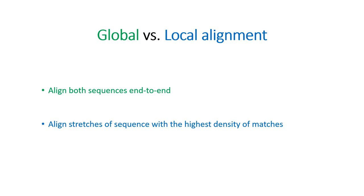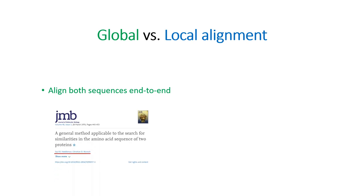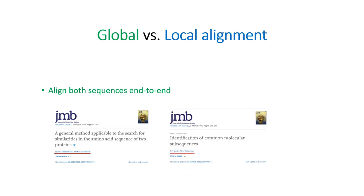Today we will discuss Needleman and Wunsch algorithm, which generates a global alignment. Needleman and Wunsch were two scientists who used dynamic programming for sequence alignment for the first time — their paper was published in 1970. The same dynamic programming approach was later applied to local alignment by Smith and Waterman in 1981.